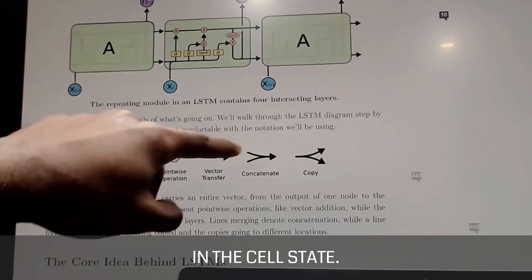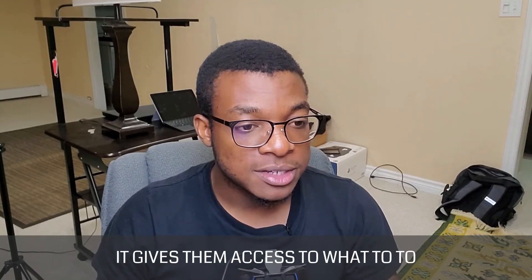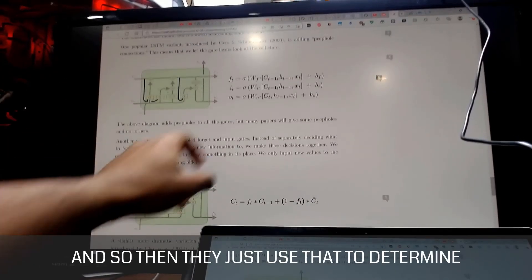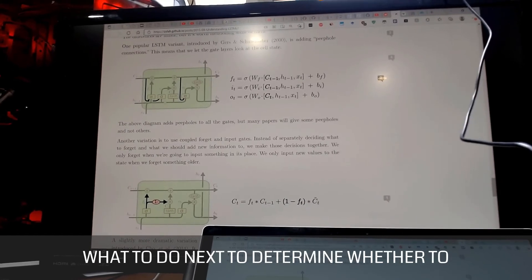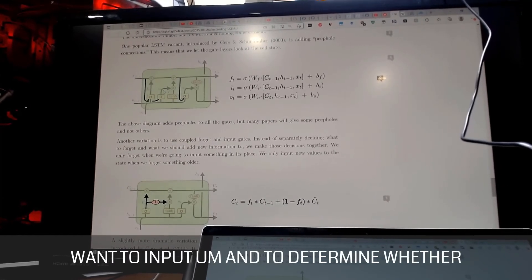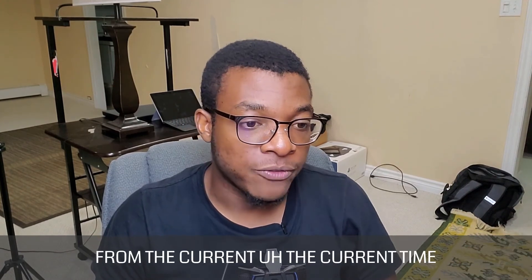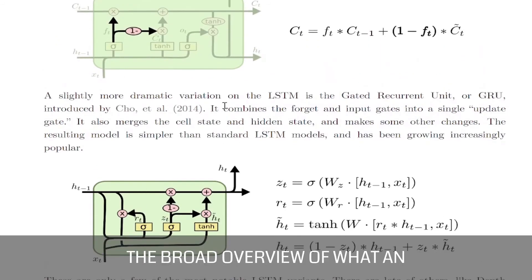But none of them really know what's going on in the cell state. So that's exactly what peephole is—it gives them access to what, to be able to read what's in the cell state. And so then they just use that to determine what to do next, to determine whether to forget, to determine whether or not I want to input and to determine what should be outputted from the current time step.